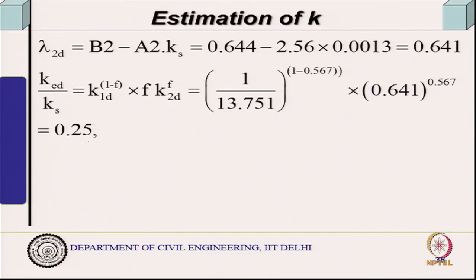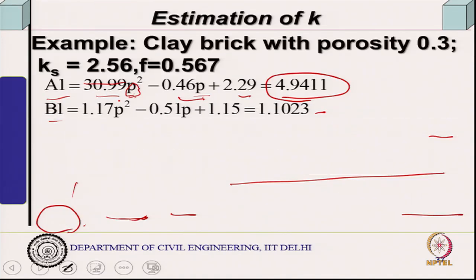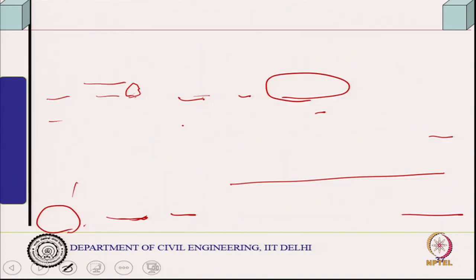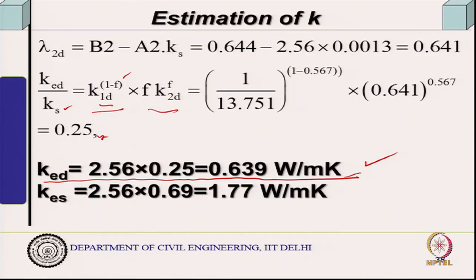One can then find K_ed/K_s using the formula given earlier — K₁d to the power of the fraction of pores and the other type — giving K_ed/K_s = 0.25. Therefore conductivity K_ed = 2.56 × 0.25 = 0.639 W/m·K, since K_ed/K_s = 0.25 and K_s = 2.56 from the table. So if you know the solid conductivity you can estimate in this manner.